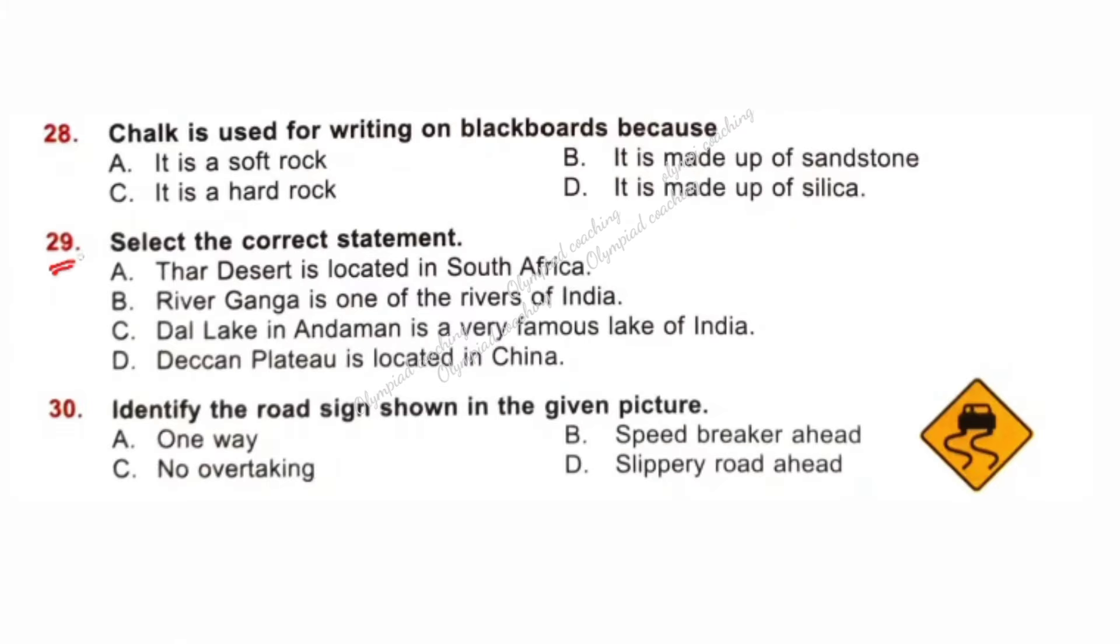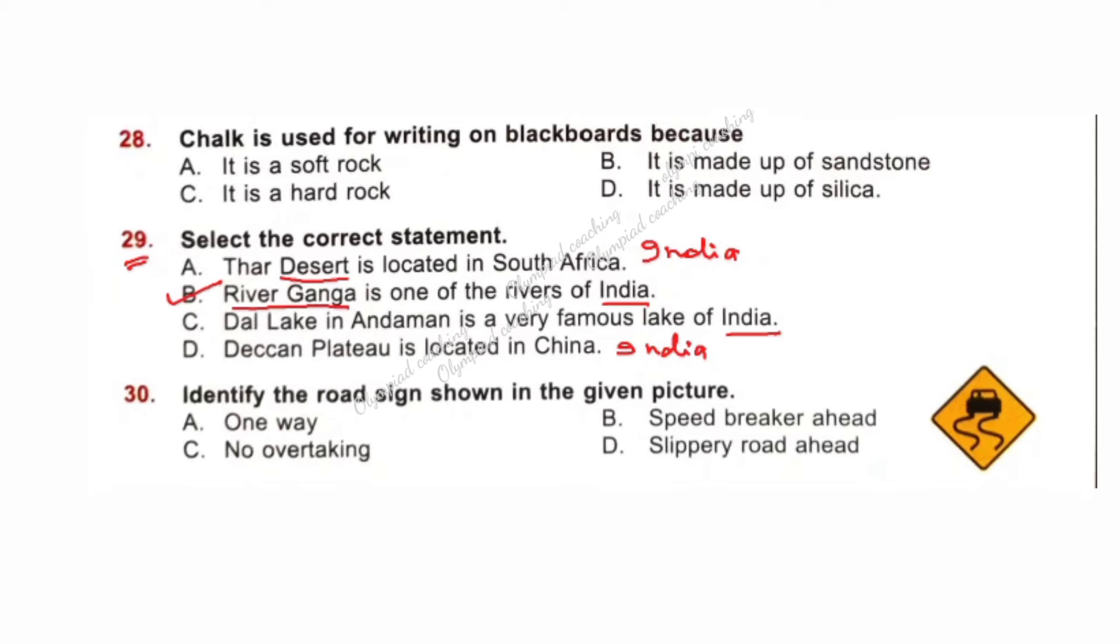Question number 29. Select the correct statement. Option B is correct: River Ganga is one of the rivers of India. Option A: Thar desert is located in India, not in South Africa. Dal Lake is a very famous lake of Srinagar in India. Deccan Plateau also located in India. Question number 30. Identify the road sign shown in the given picture. Option D is correct. This is road sign of Slippery Road.